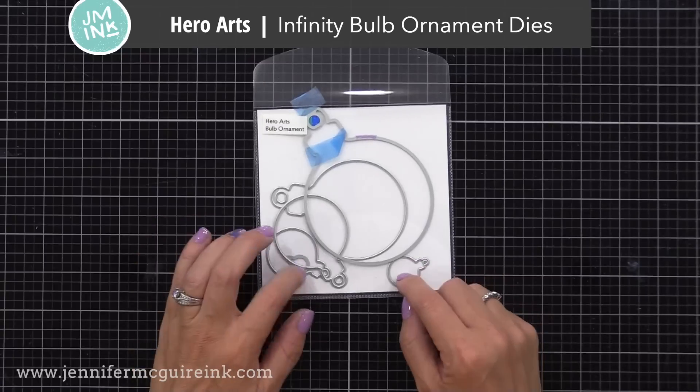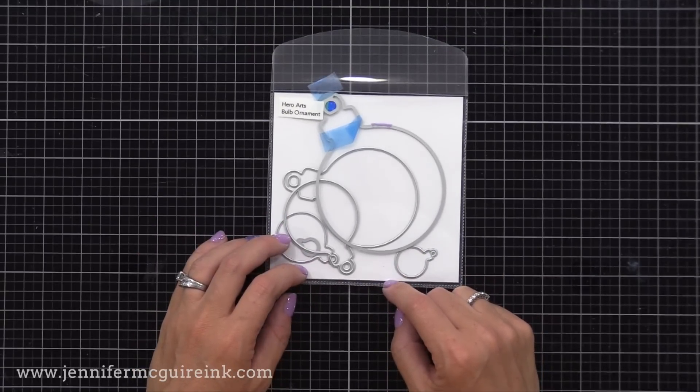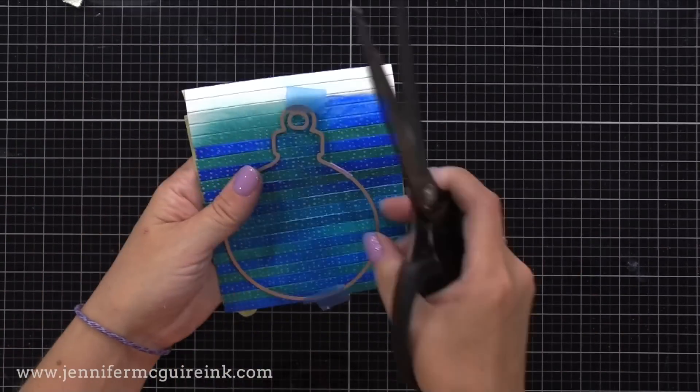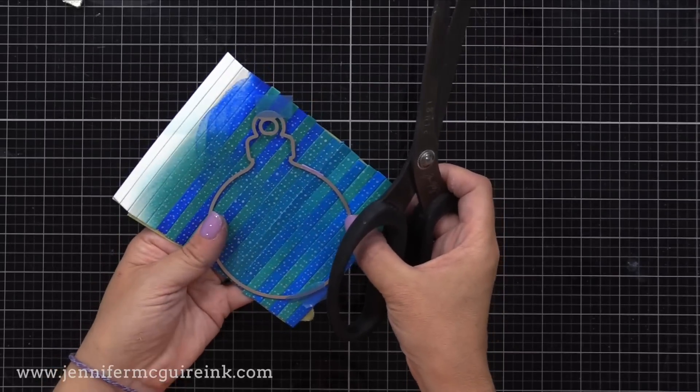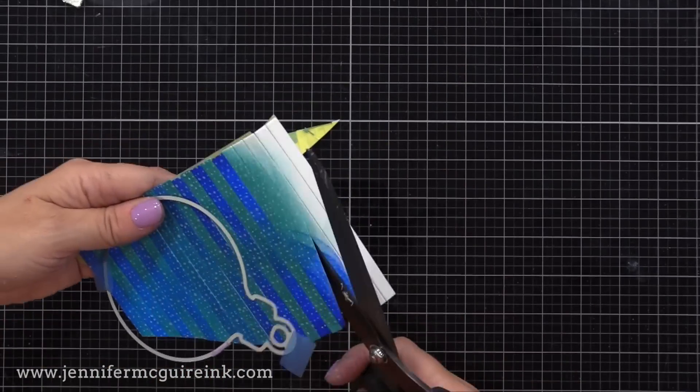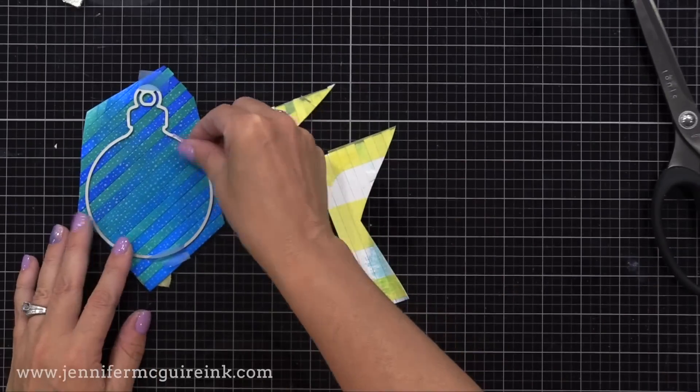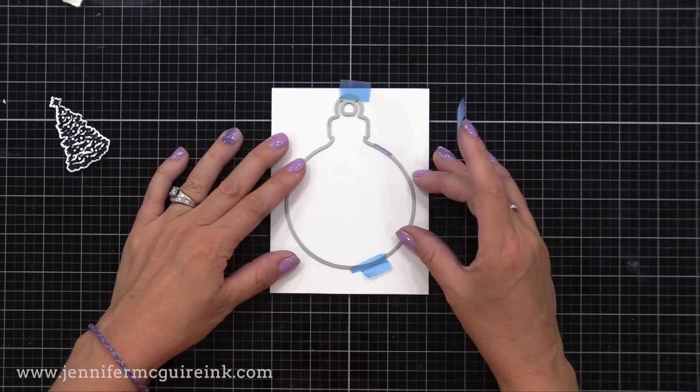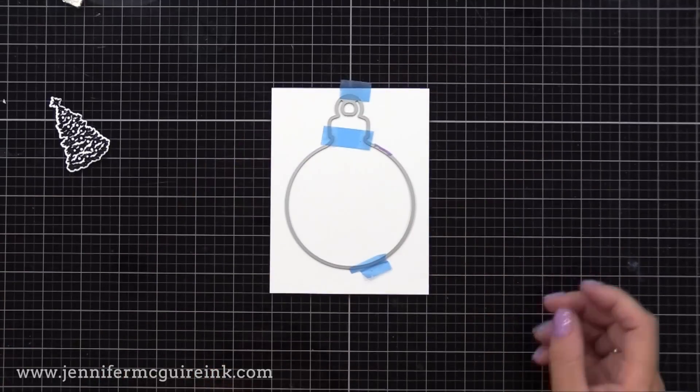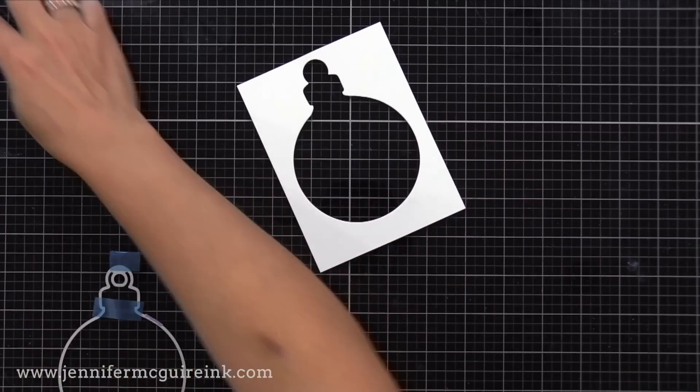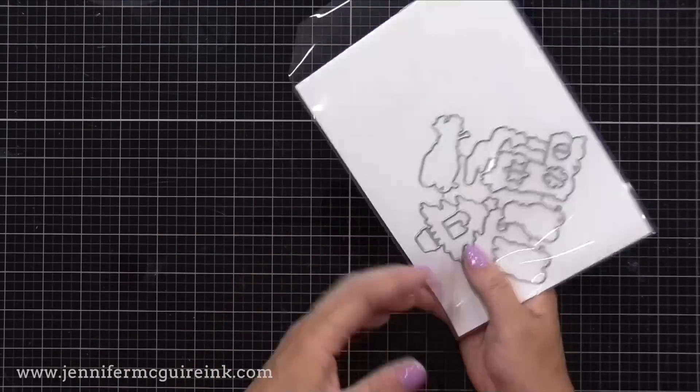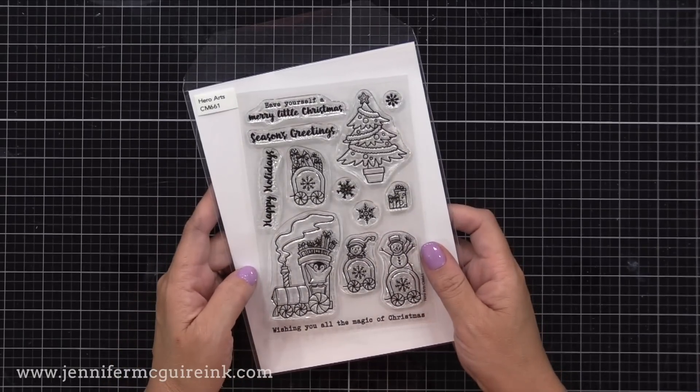So now we have our background done. For this card, I'm also using the Hero Arts Infinity Bulb Ornament Die Set. I'm using the largest ornament for this card. I thought it'd be fun to make the stripes kind of go at a diagonal on this instead of horizontal. Next I have a piece of white card stock that is four by five and a quarter inches. I'm taping that ornament towards the top center of that background and running it through my die cut machine. For a sentiment, I'm using the Hero Arts North Pole Express Stamp Set.